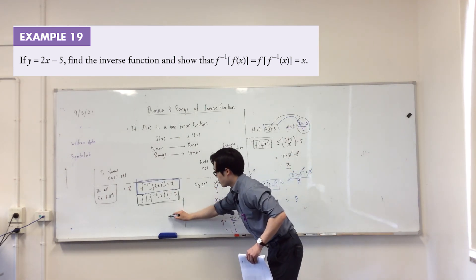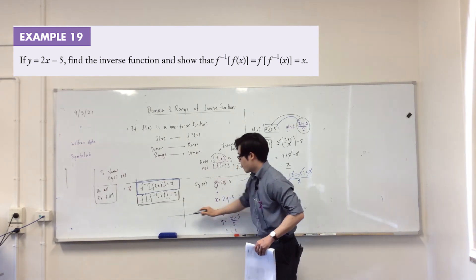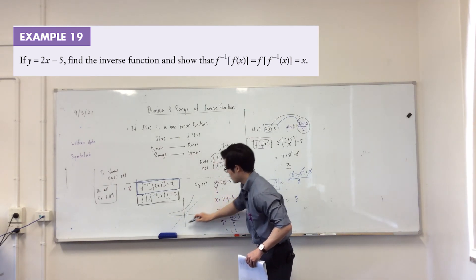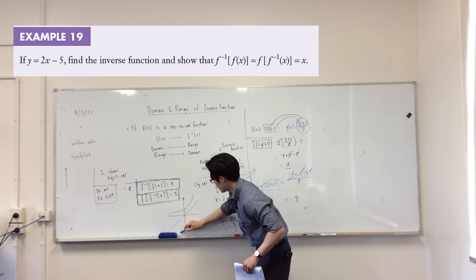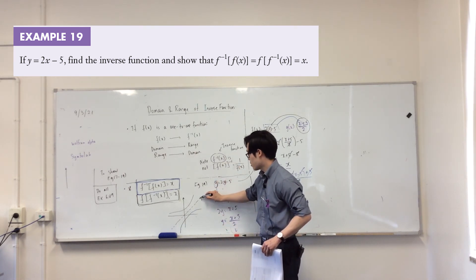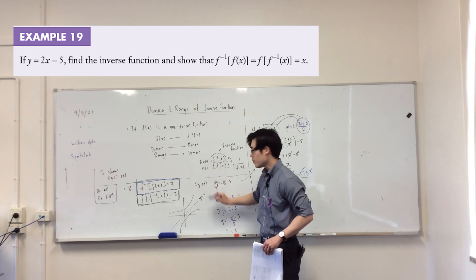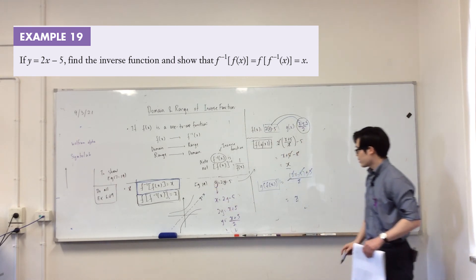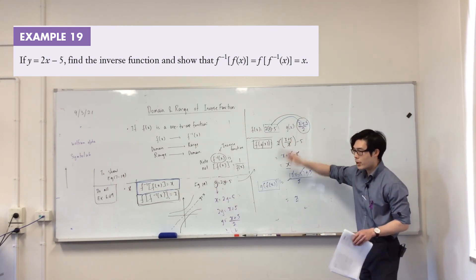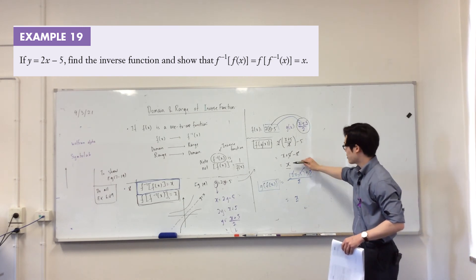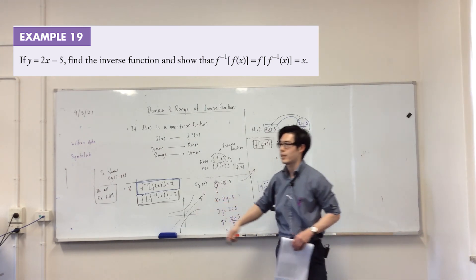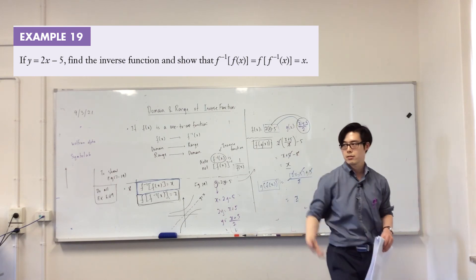What was the graphical property of the inverse? If you wanted to draw the inverse of a function, it's just a reflection — a reflection about the line y equals x. That's why when you compose the original and the inverse, you always get x — because you're reflecting about y equals x.